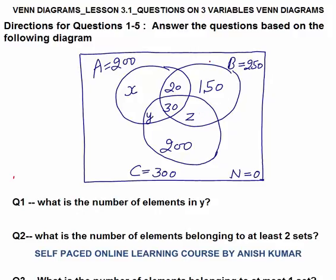The complete B circle, or B set, is 250. If you add 150 plus 20 plus 30, the total is 200. So what should z be? Z would be 50 — only then will this complete B circle become 250.